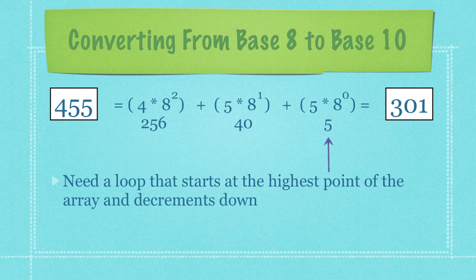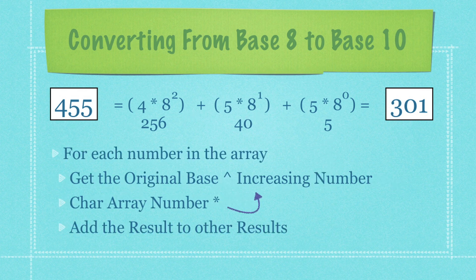We're going to create a loop that starts at the highest point of the array and slowly decrements down. For each number in our array we get the original base — 8 in this situation — and take it to the power of an increasing value from 0, 1, 2, and so on depending on the total array size. We multiply each character (5, 5, 4) by the corresponding power, then add all results together to get our final base 10 representation.